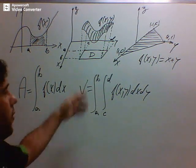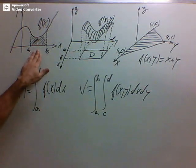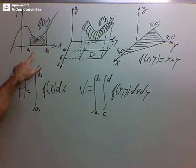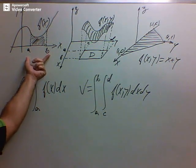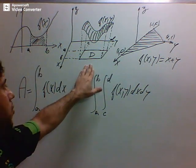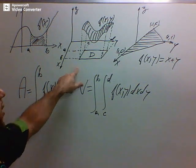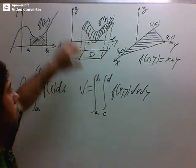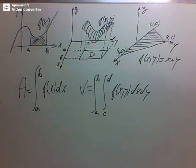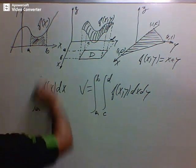The volume of the solid is bounded by this region in the plane and by the function on top. So here we have an area for the single integral, and here we have a volume for the double integral. We integrate over an interval that belongs to the x-axis for the single case, and over a region in the xy-plane for the double case. When we have a double integration, instead of an area we get a volume bounded by the region D and the function on top.